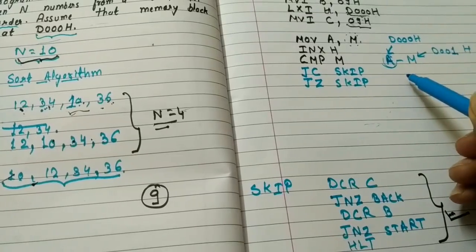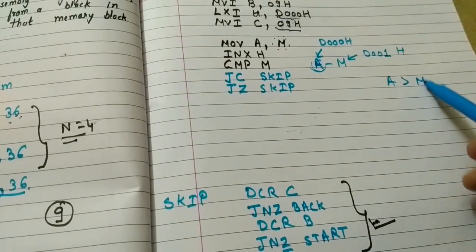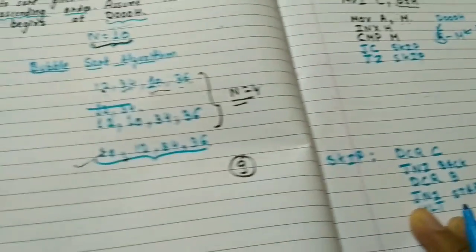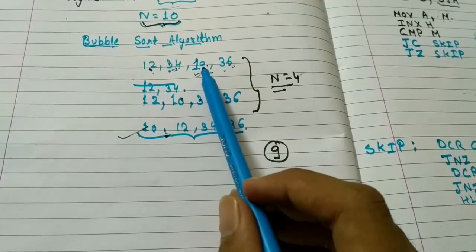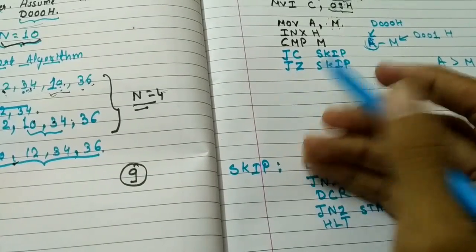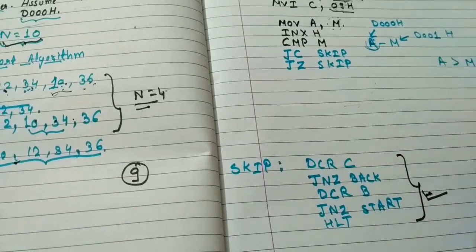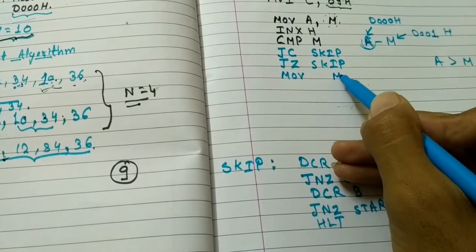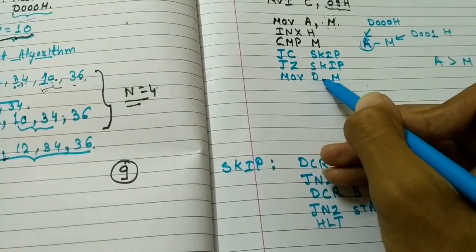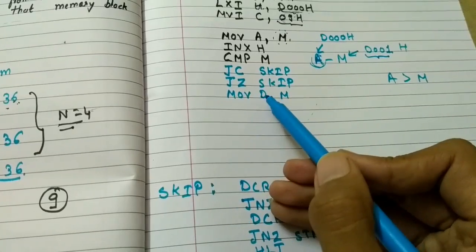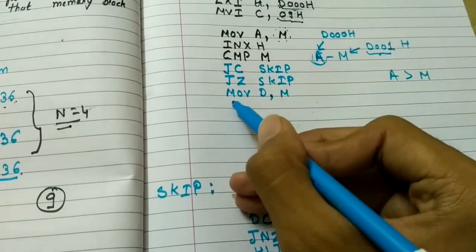If A is greater than M, no carry is generated, so we do not jump to SKIP. Instead we must swap the contents. Direct swapping is not possible in 8085, so we use a temporary register. First we move the contents of M — which is the data at D001h — into register D temporarily.